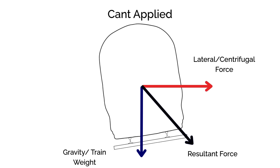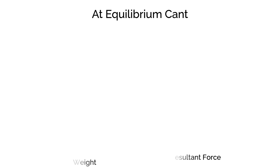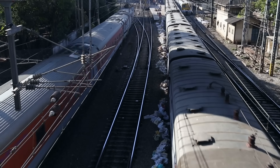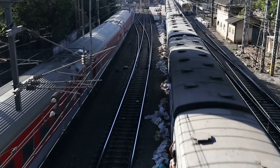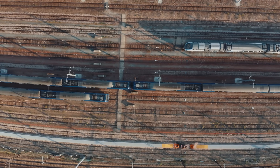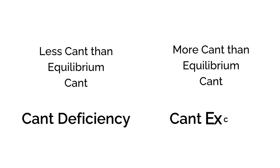For a curve at one specific speed, one value of cant perfectly balances the forces so the resultant acts directly into the track. This is the equilibrium cant, calculated with a specific equation. But that calculation is only valid for that single speed. Trains don't all travel at the same speed, so one equilibrium cant value can't serve every train. If a train moves faster than that design speed, the cant is no longer sufficient — that's cant deficiency. If it's slower and there is too much cant, this is known as cant excess.